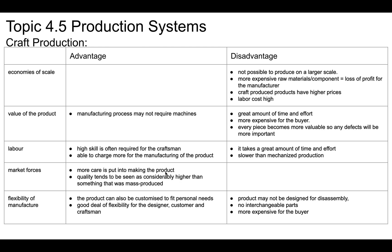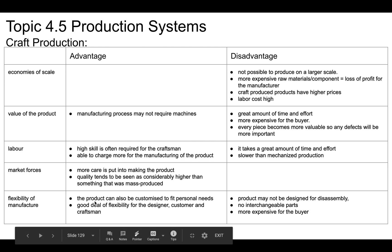More care is put into the product, and the quality tends to be considerably higher because it's not mass produced. Flexibility — you have a lot of flexibility because you can actually make it fit the customer. But it may be that it can't be disassembled easily and there are no interchangeable parts because it's a one-of-a-kind thing. Therefore it's also more expensive for the buyer.